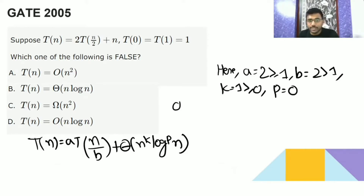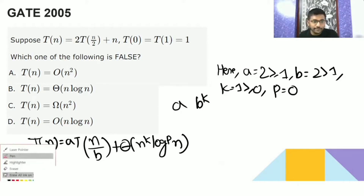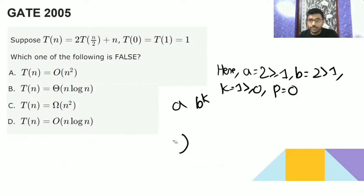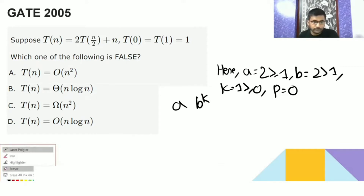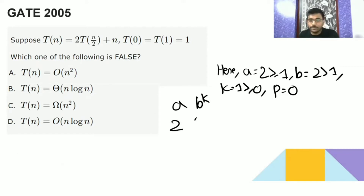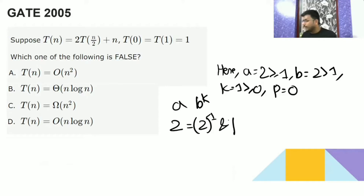Now compare A and B to the power K. A is 2 and B is 2, so B^K = 2^1 = 2. Since A equals B^K, they are equal. And P is greater than minus 1.